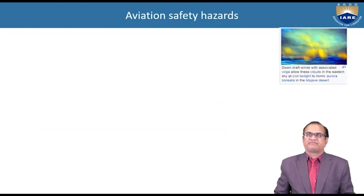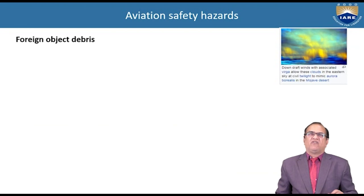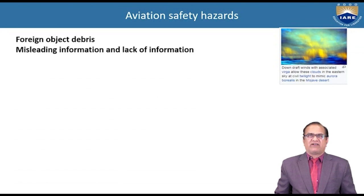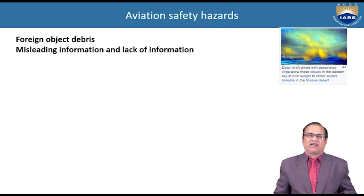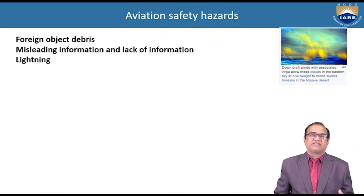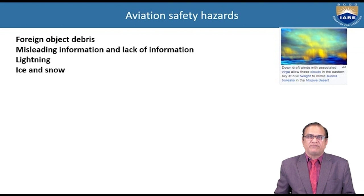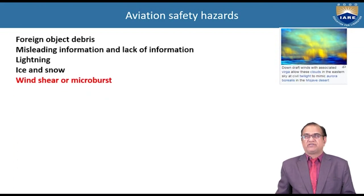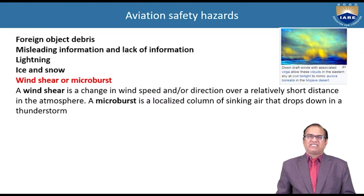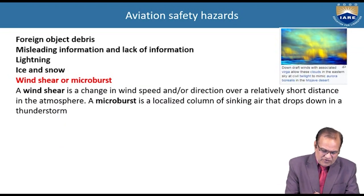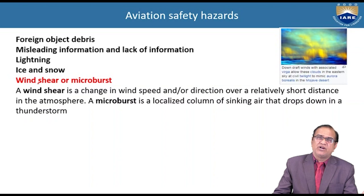Air safety hazards include foreign object debris found on aircraft that are not necessary, misleading information, lack of information, lightning from clouds, ice and snow, and different types of weather conditions that create problems. Wind shear and microburst are major hazards causing many accidents. Wind shear is a change in wind speed and/or direction over a relatively short distance in the atmosphere.